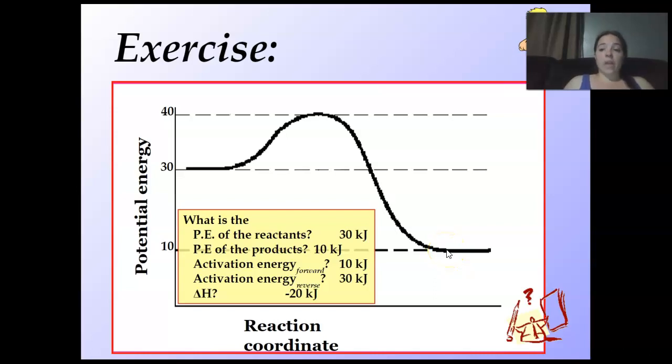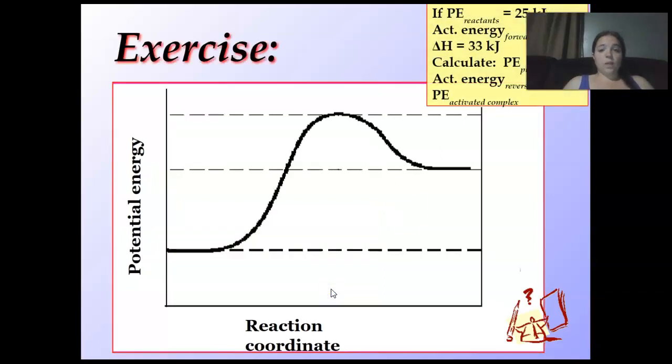What's my delta H? I want just this middle part. That is 10 minus 30. Remember, you're doing products minus reactants. 10 minus 30 is a negative 20 kilojoules.